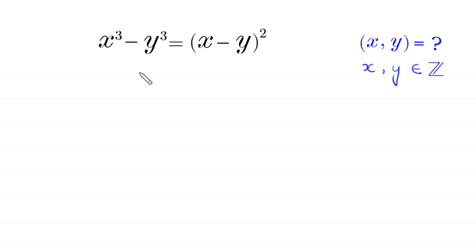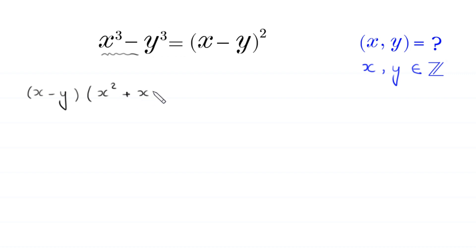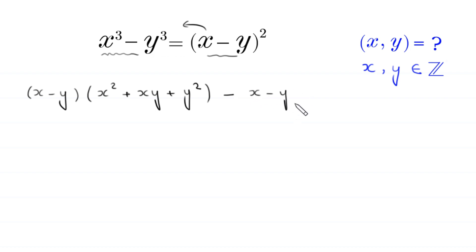Let's start. Now, x cubed minus y cubed can be factorized as x minus y times x squared plus xy plus y squared. And we move this expression to the left hand side. This will become negative x minus y whole squared is equal to 0.